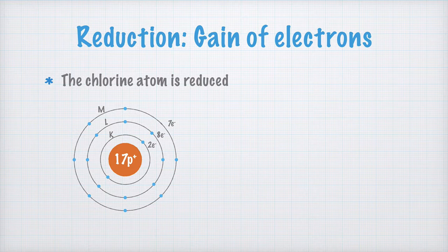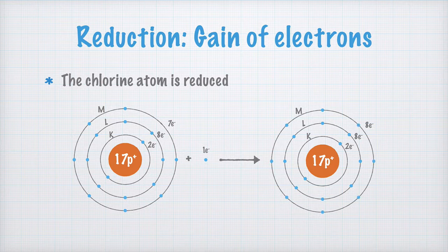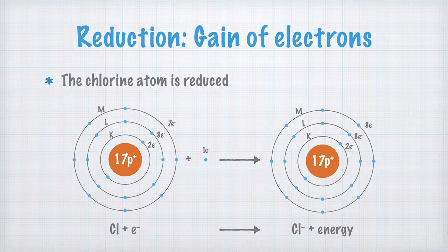What happens to the chlorine atom when it is reduced — that is, when it takes up an electron? Let's draw it. There are still 17 protons in the nucleus, 2 electrons in the K-shell, 8 in the L-shell, but now there are 8 electrons in the M-shell. Eight valence electrons is really stable, so the chlorine atom is quite satisfied this way. The chlorine atom has picked up an electron, and a chloride ion is formed, while a lot of energy is released. It's just like letting go of that rock — its potential energy converts to kinetic energy, and finally to heat energy released when it hits the ground.